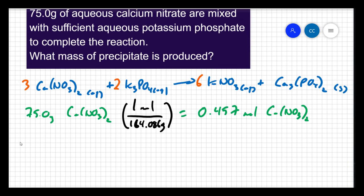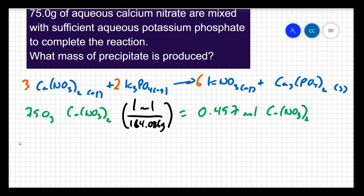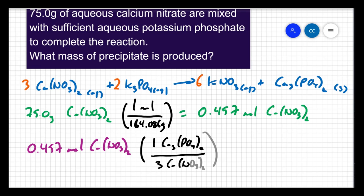Now we can use that number of moles to figure out the moles of precipitate. So if I have 0.457 moles of calcium nitrate, my balanced equation says that there is one calcium phosphate for every three calcium nitrates. So if I use that ratio, that tells me I'm going to generate 0.152 moles of the calcium phosphate.